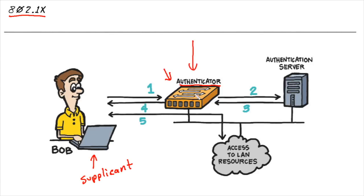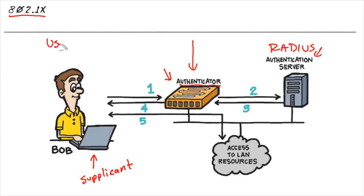So when Bob connects, the authenticator, working in conjunction with a AAA server — for example, this could be a RADIUS server — is going to request Bob to authenticate. And as part of the authentication, Bob may have just a username and password.